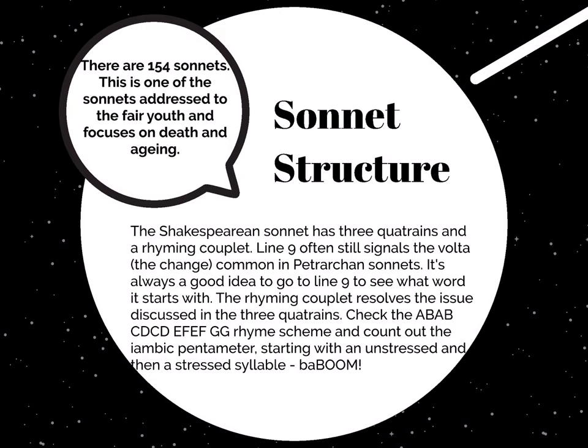The rhyming couplet in the Shakespearean sonnet form resolves the issue discussed in the three quatrains. We're going to look at the rhyme scheme and also count out the iambic pentameter. Iambic pentameter is a line of poetry that contains 10 syllables, broken into pairs — five pairs, so 5 times 2 equals 10. In each metrical foot you have two syllables: one unstressed and one stressed syllable.